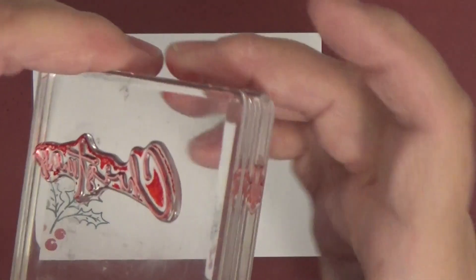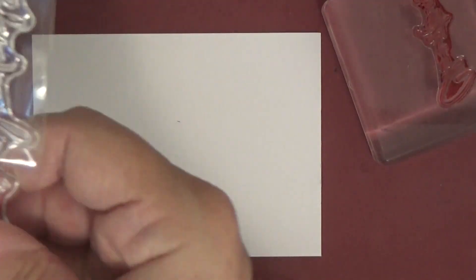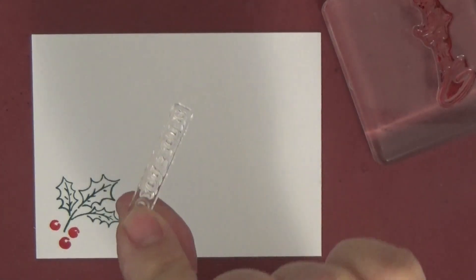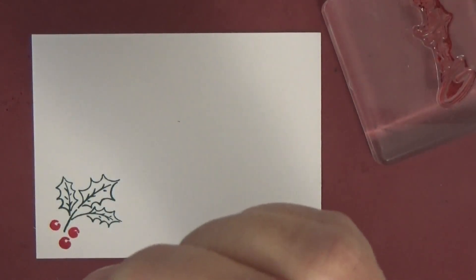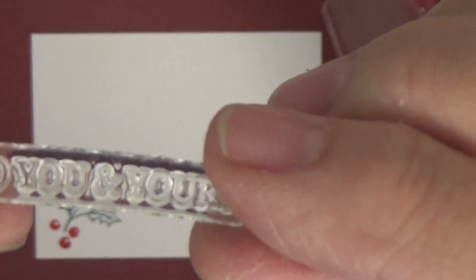We're going to put Merry Christmas on the top. I've got a red. What they are is photopolymer. These stamps are what they call photopolymer. To you and yours, maybe say put Merry Christmas to you and yours. As you can see, it's just a little photopolymer stamp. To you and yours, and you stick it on an acrylic block and stamp it in the ink.